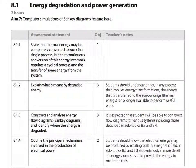If you take a look at the IB Physics Guide for Topic 8.1, you can see there are four subtopics. Topic 8.1.1 says: State that thermal energy may be completely converted to work in a single process, but that continuous conversion of this energy into work requires a cyclical process and the transfer of some energy from the system.